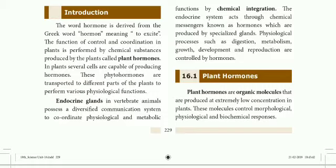The endocrine system acts through chemical messages known as hormones. These chemical messages are chemical substances — hormones are secreted by specialized glands. Not all glands secrete hormones; only some specialized glands secrete hormones.